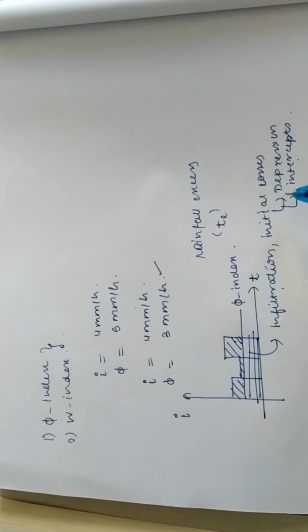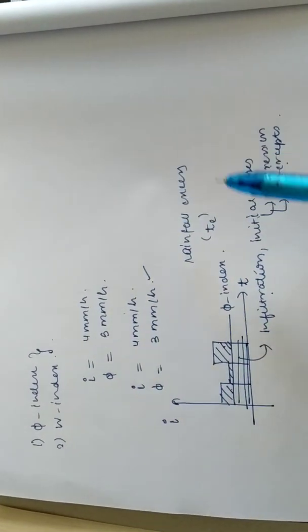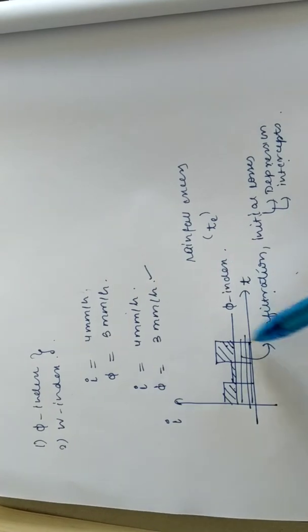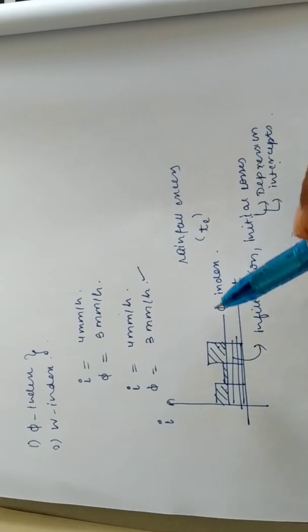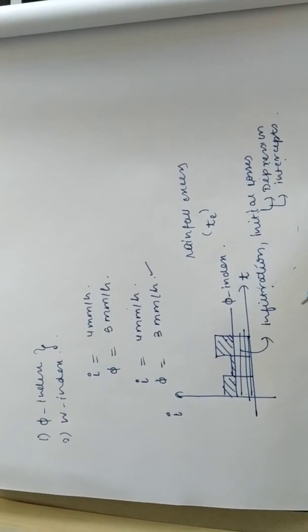This W index is a refinement over phi index in this term that W index indicates purely infiltration. It will not include all these losses. It will separate these two from the rainfall.